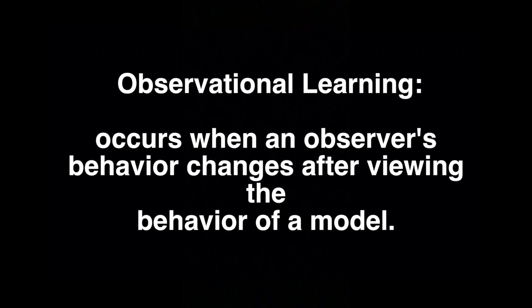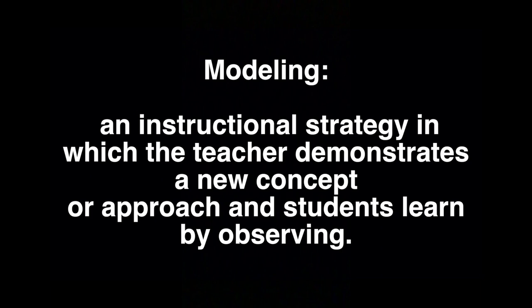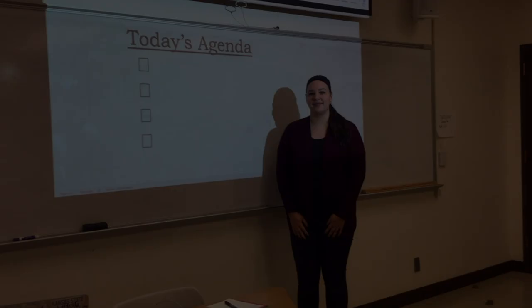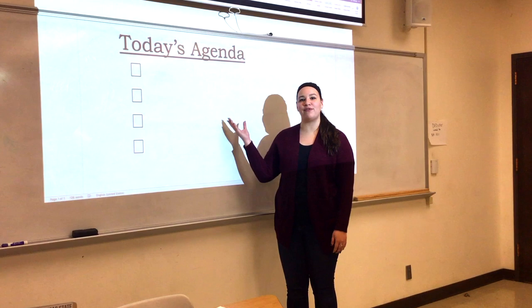Within social cognitive theory, you can find the concept of observational learning, which occurs when an observer's behavior changes after viewing the behavior of a model. One key component of observational learning is called modeling. Modeling is an instructional strategy in which the teacher demonstrates a new concept or approach and students learn by observing.